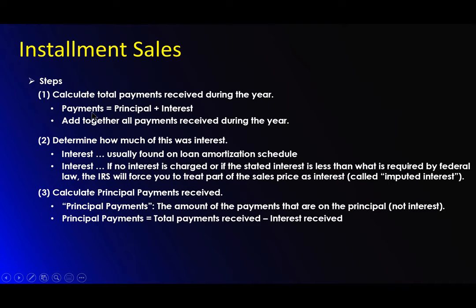Calculate the total payments received during the year: payments equal the principal plus the interest. Add together all the payments received during the year — whether five payments, ten payments, fifteen payments, whatever it took during that particular tax year. You will have additional payments in the years following because they're still making payments. An installment sale goes past the existing tax year, but you're only concerned about the current tax year.